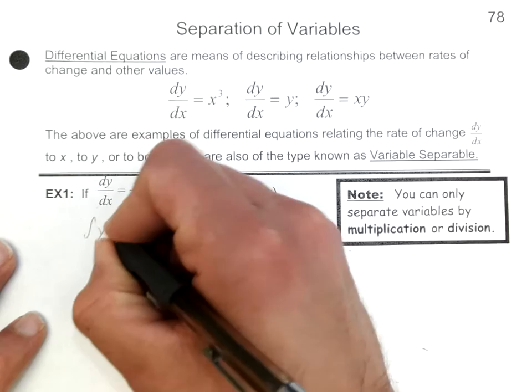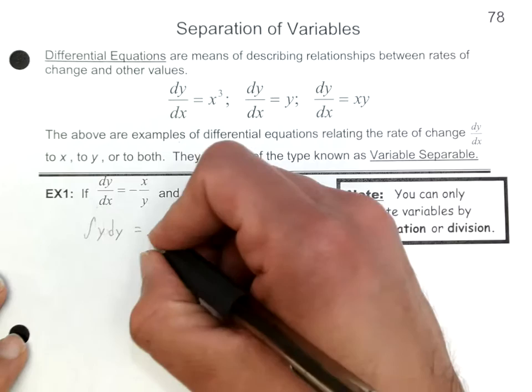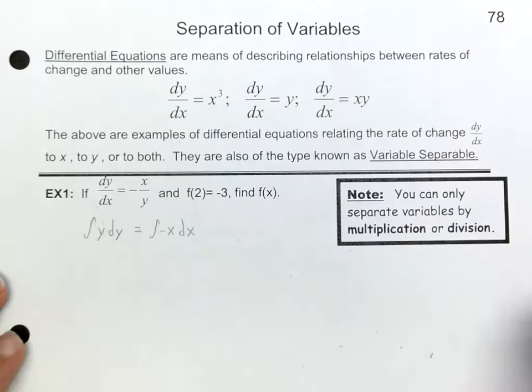That will give me y dy on the left side. On the other side of the equal sign, I have x by itself. I'm going to multiply both sides times dx, so I would have the integral of negative x dx. Now I'm going to integrate each side — the left side with respect to y and the right side with respect to x.